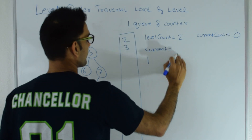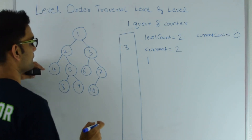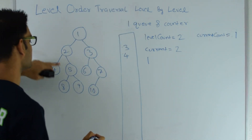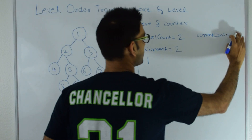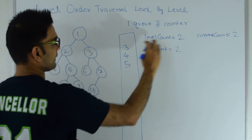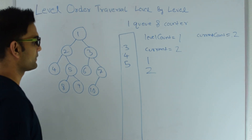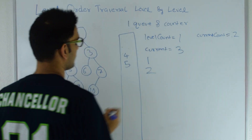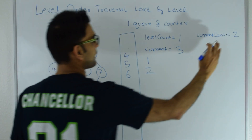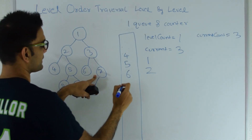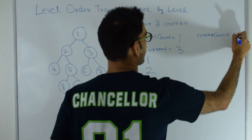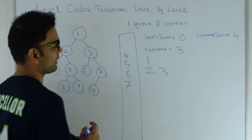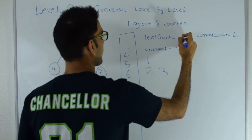Next I pop from the top of the queue — that's 2. 2 has a left child 4 so I push that into the queue and increment current count to 1. 2 has a right child 5 so I push that into the queue and increment current count to 2. I print 2 and decrement level count. I keep decrementing until it becomes 0, then go to the new line. I pop again — that's 3. 3 has a left child 6 so that goes into the queue and current count becomes 3. 3 has a right child 7 so I push that and current count becomes 4. I print 3 and decrement level count. As soon as level count becomes 0, I put a new line, copy current count into level count, and make current count 0.